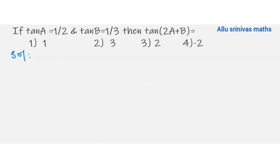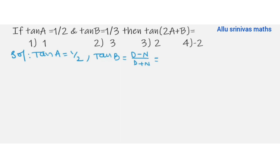Next, another very important problem from previous ESET questions: tan A equal to 1 by 2, tan B equal to 1 by 3, then tan(2A+B) equal to what? The options are 1, 3, 2, minus 2. Whether the angles are called A and B or alpha and beta, the same process applies.